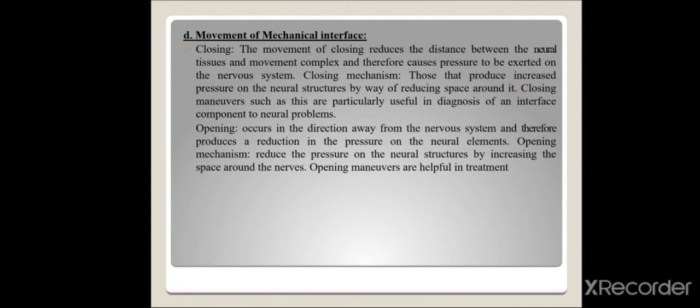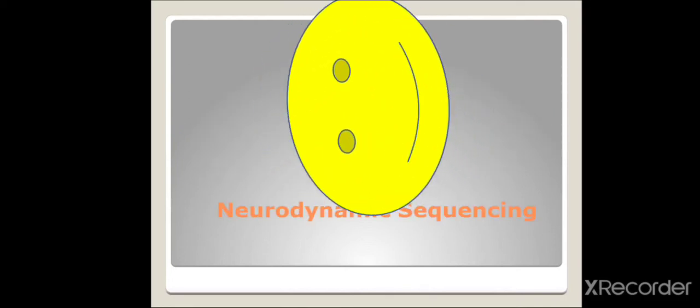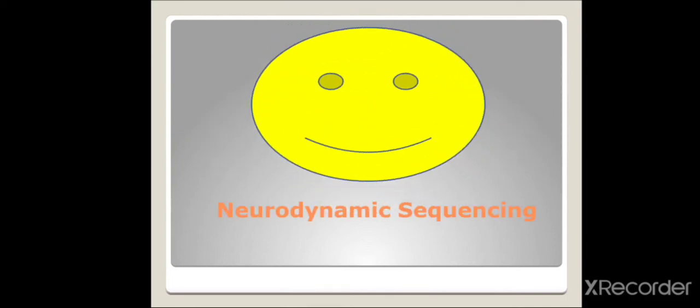Neurodynamic sequencing refers to the order in which joints are targeted during neurodynamic testing or treatment. There are five key points. First, the sequence of movements affects the distribution of symptoms in response to neurodynamic testing — starting from the cervical spine versus starting from the wrist produces different symptom distribution for median nerve testing.